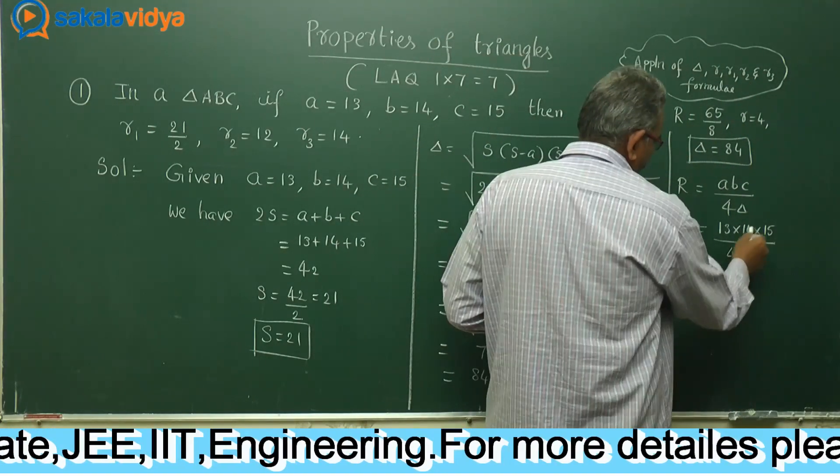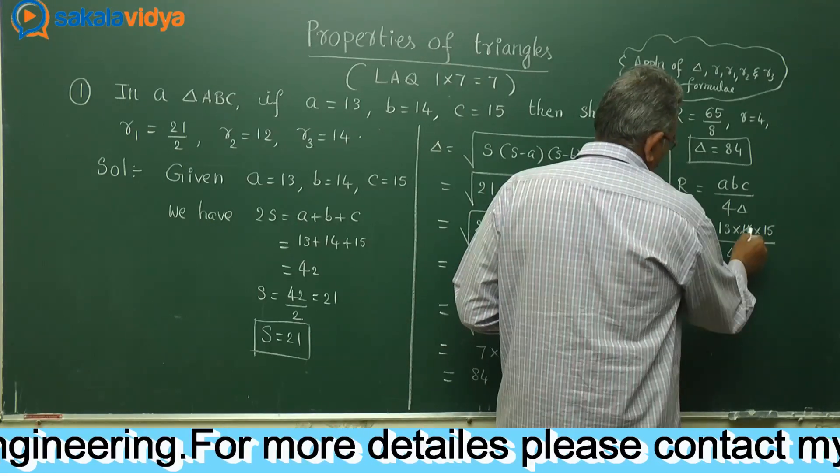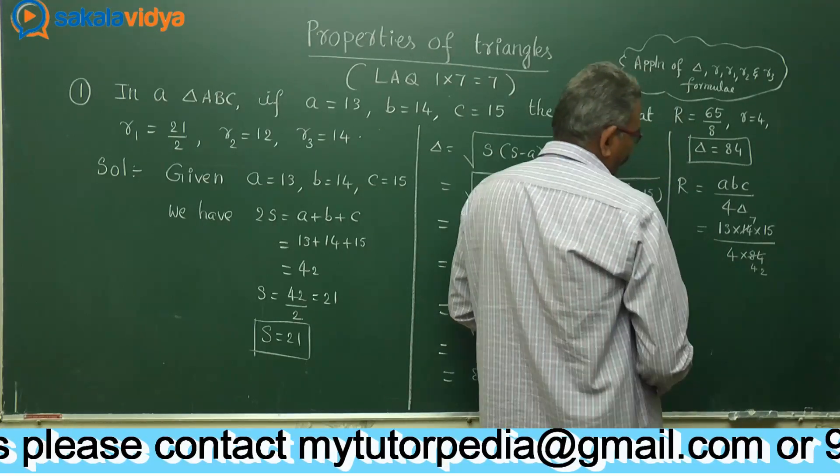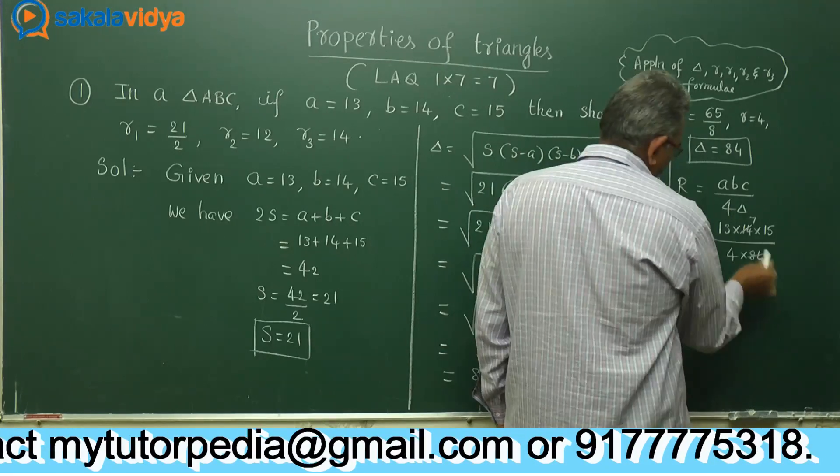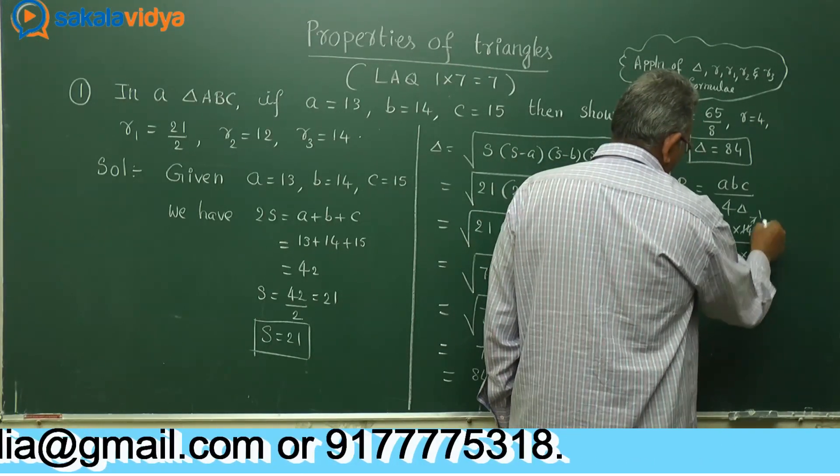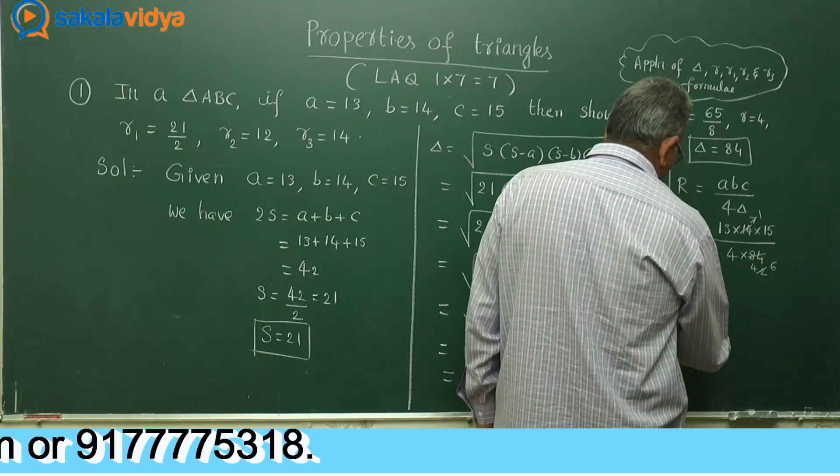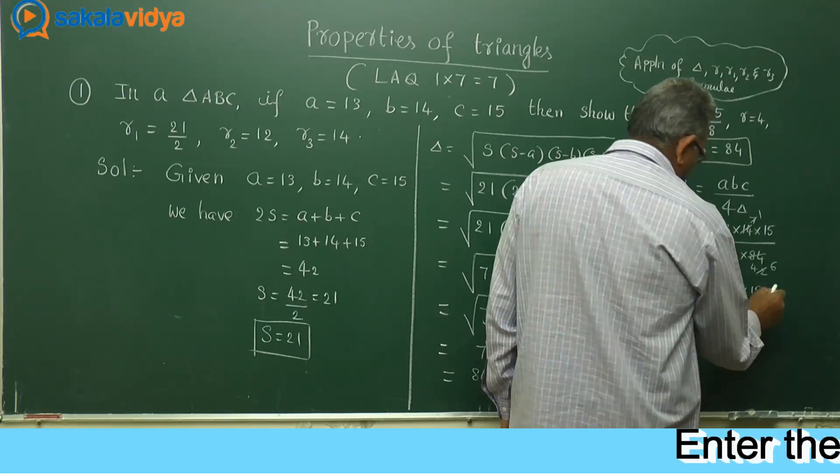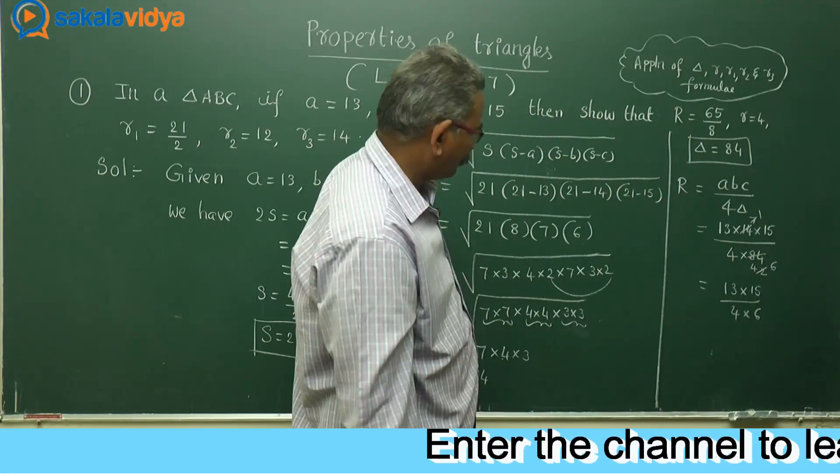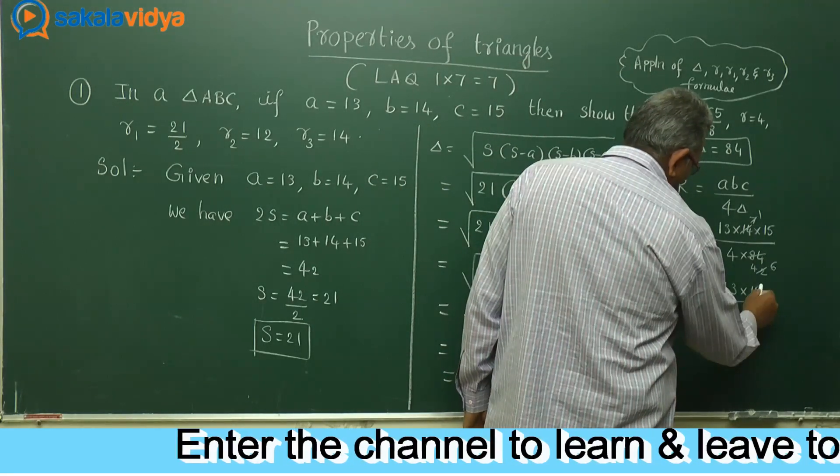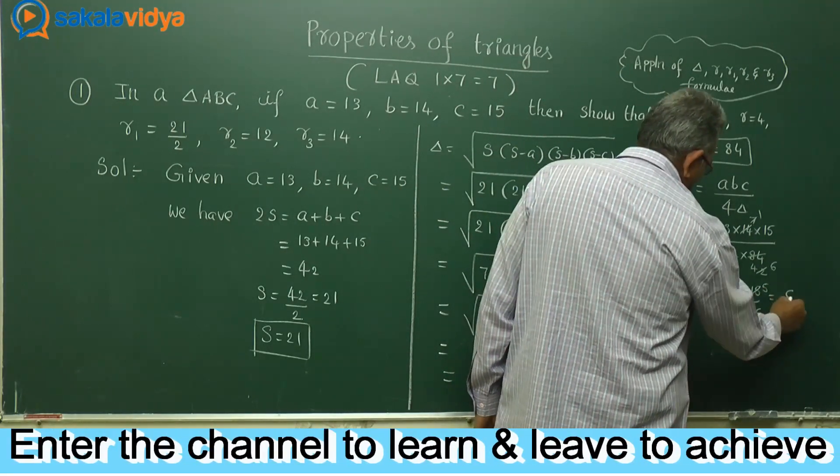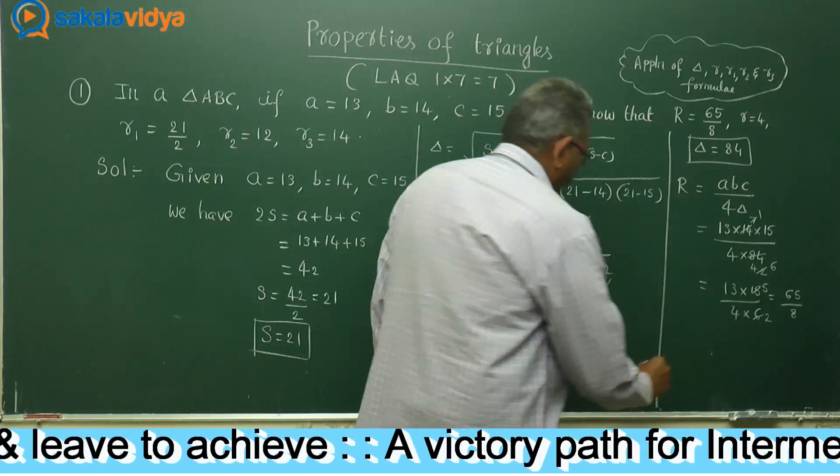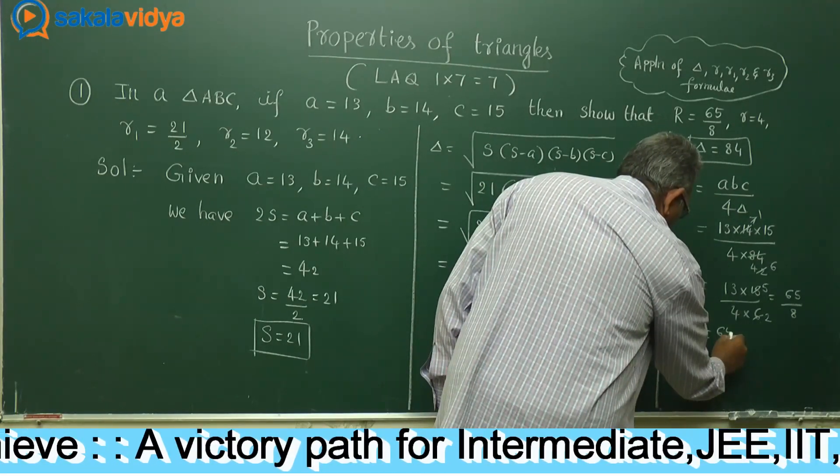Here 2, 7, 2, 7, 2, 4, 2, 2. Next 7, 1, 7, 6. We have 13 into 15 by 4 into 6. Further it can be simplified now. 3, 2, 3, 5, 65, 13, 5, 8, 65 by 8. That means capital R value has been evaluated, that is 65 by 8.